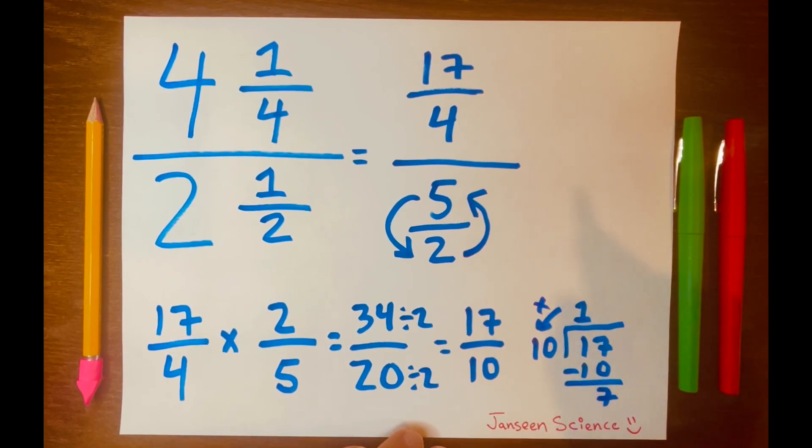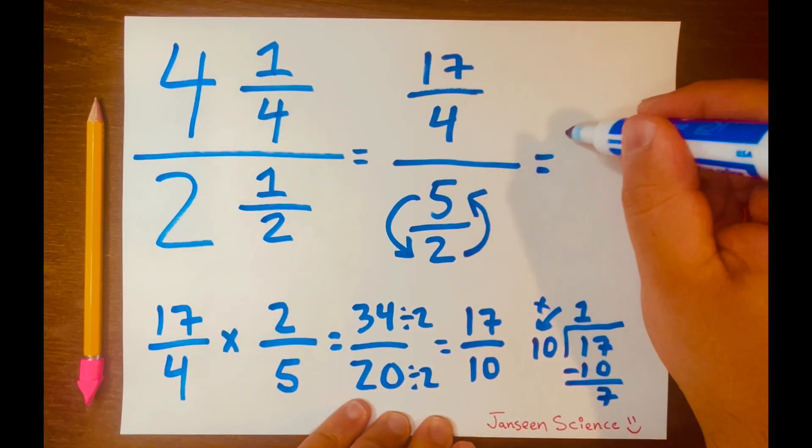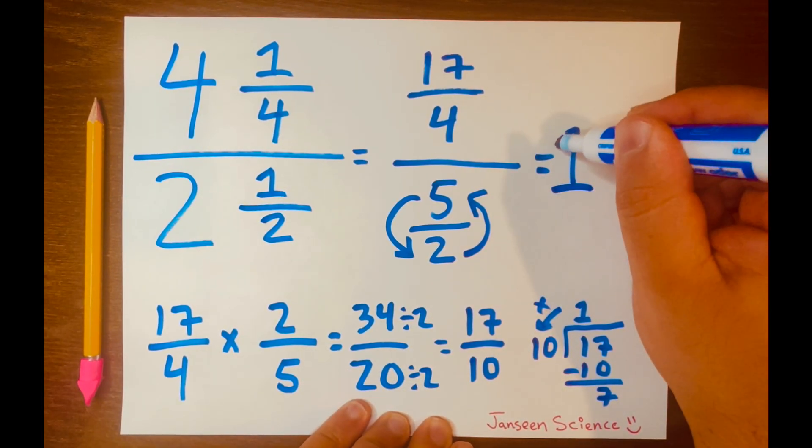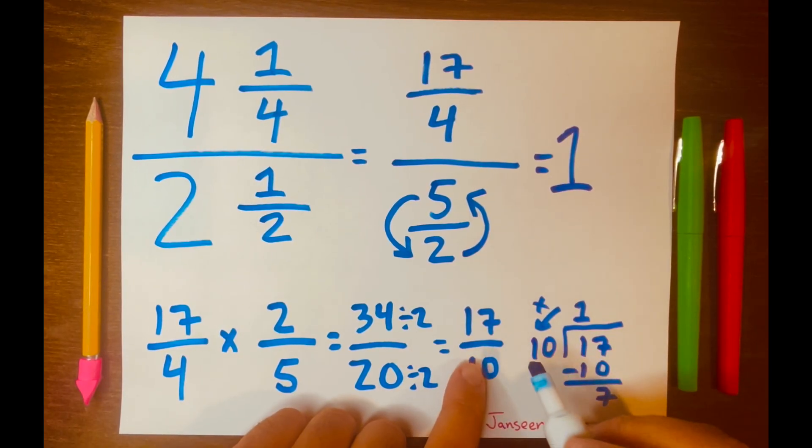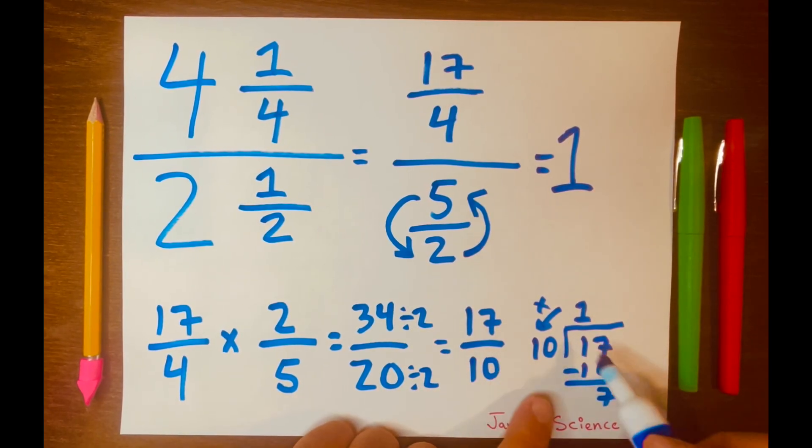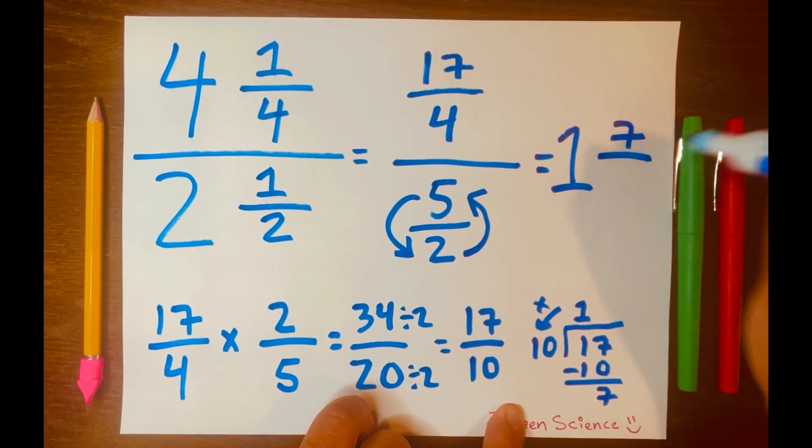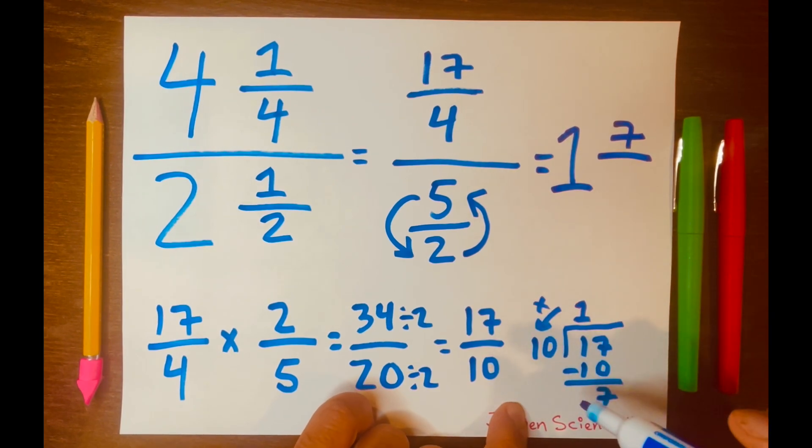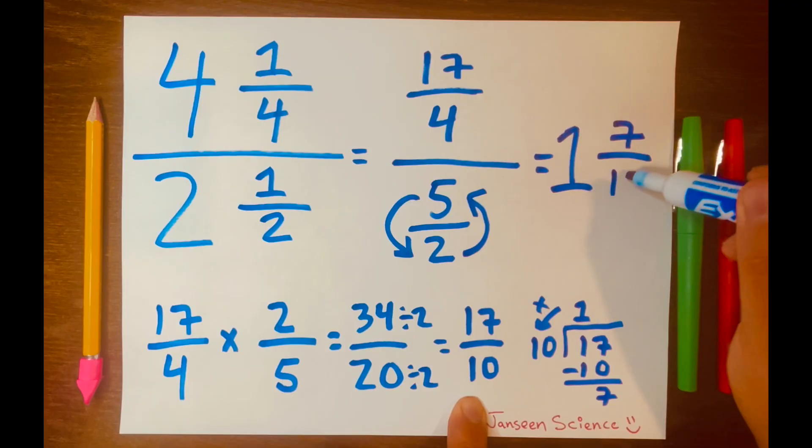So our mixed number answer is 1. So we get the 1, and then we take the 7, which will go on top here. And then we take the denominator and write it here.